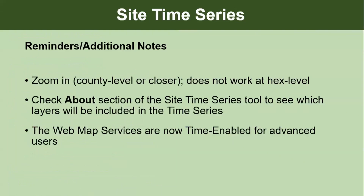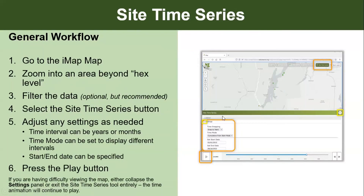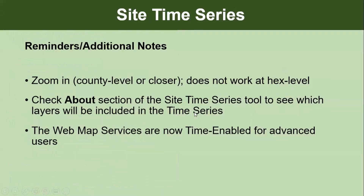We recommend zooming in to county level or closer, and checking the About section of the time series tool, which will tell you what layers are included in your time animation. Most layers should work. One caveat: there is currently a bug where you need to be signed out to use this, but starting tomorrow that issue should be resolved. Once resolved, any layers you have permission to view should work. Also, the web map service layers are now time-enabled, allowing advanced time animations if you're using web map services.